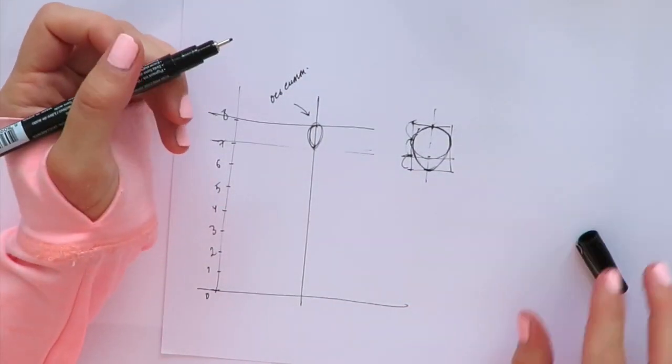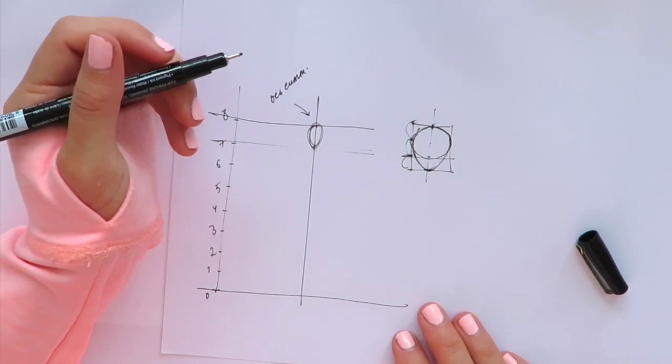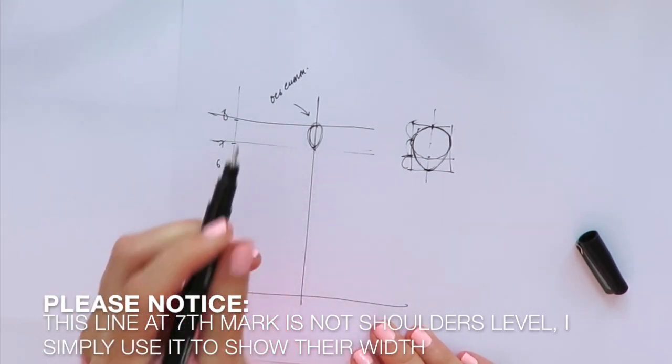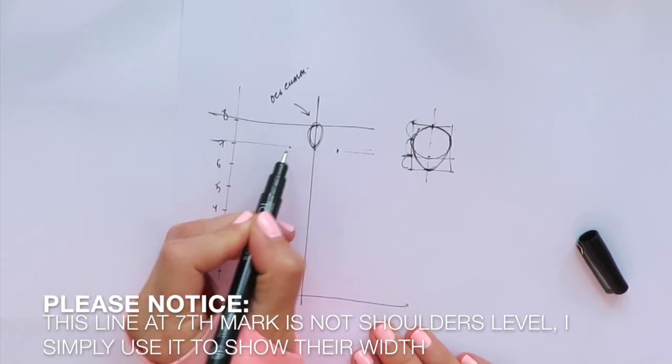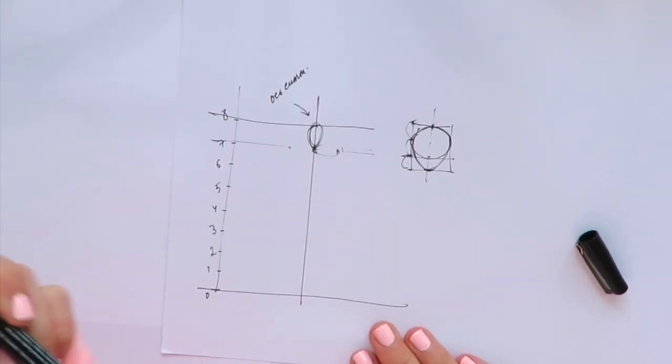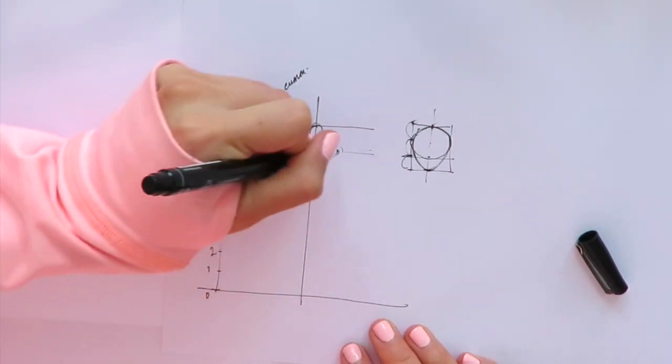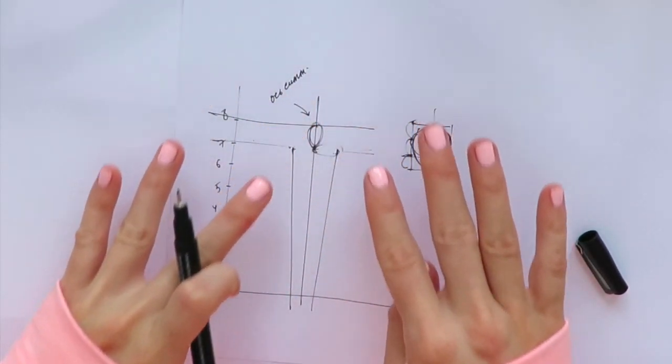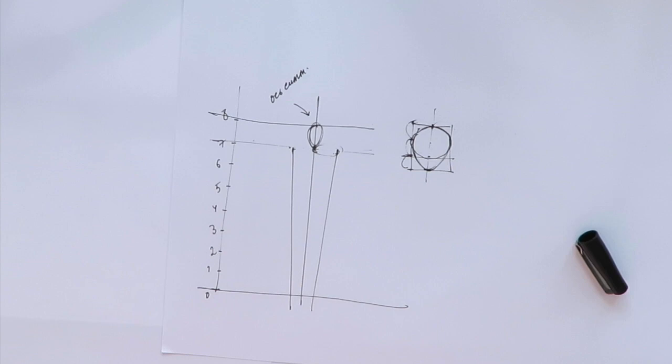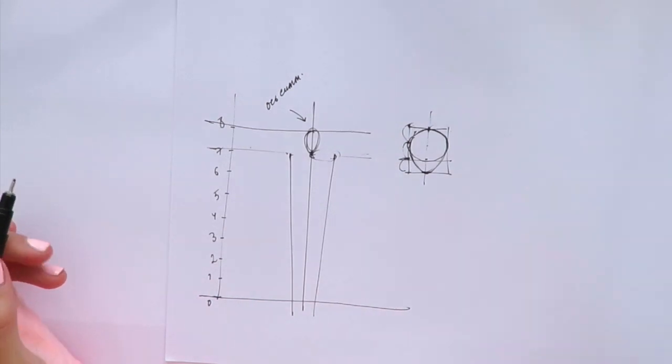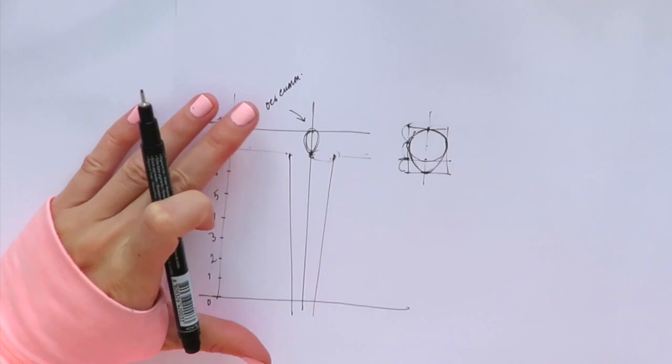We continue with the shoulders. Shoulder width - we take our head and place it horizontally. One head approximately to the right and one head to the left. You can make it a little bit smaller, but I'll show one head to each side. We create this very elongated trapezium form - basically our raw silhouette of a human figure.